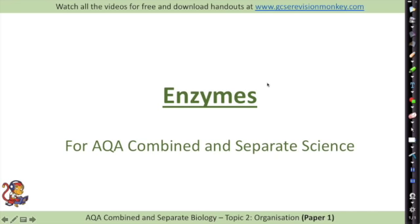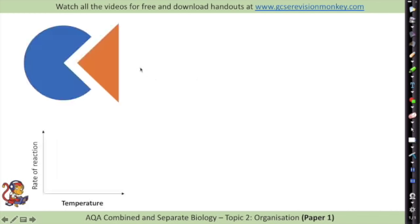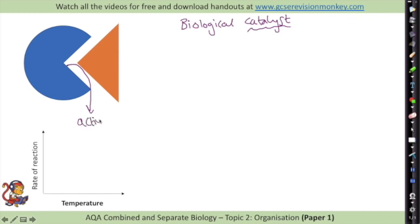Enzymes are described as biological catalysts - just like catalysts in chemistry they speed up chemical reactions that take place within organisms. The front part of the enzyme is called the active site, and a molecule that fits into it is called the substrate. With enzymes, the active site has a very particular shape to fit a particular substrate.